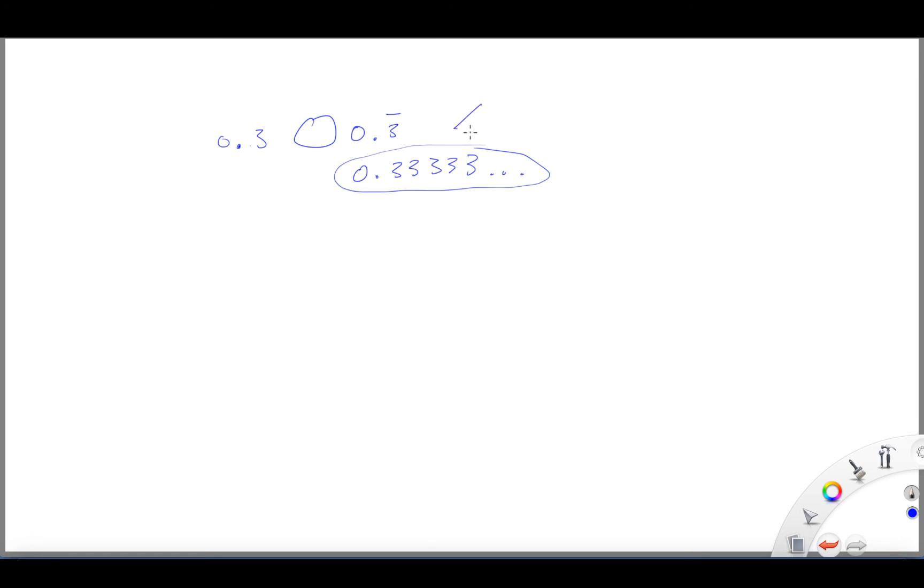Alright, so 0.3 is less than 0.033. Okay, so we can write this symbol in here. I'll just put it in the right symbol. It's less than this one. This is larger than 0.3.